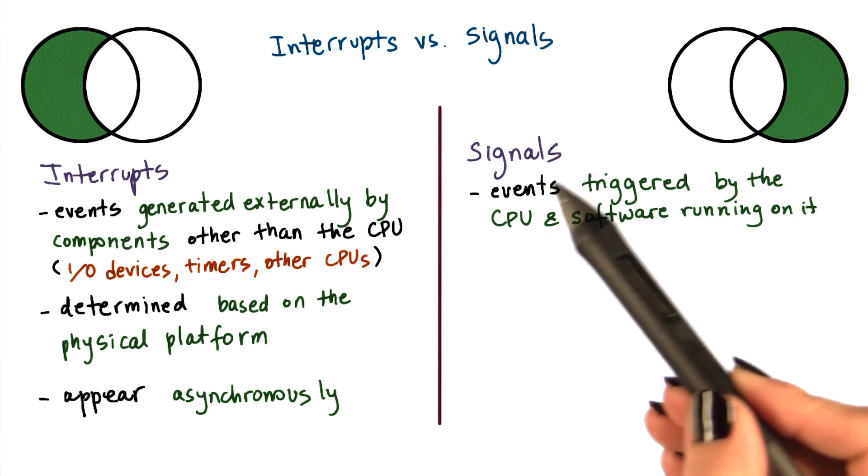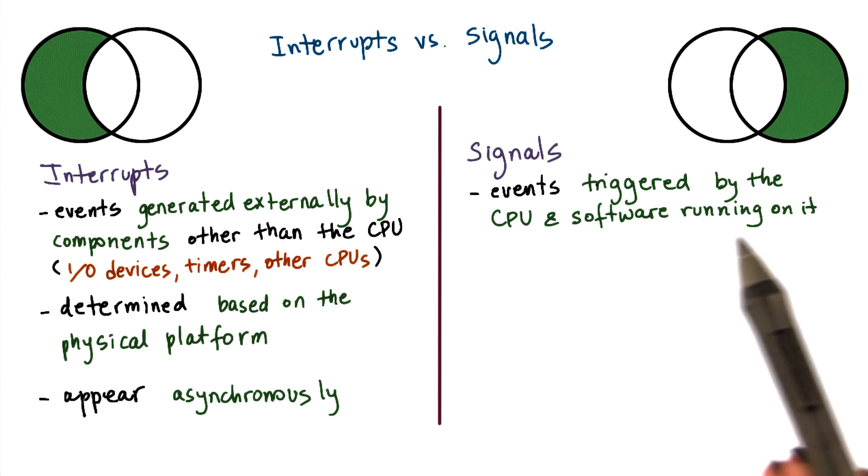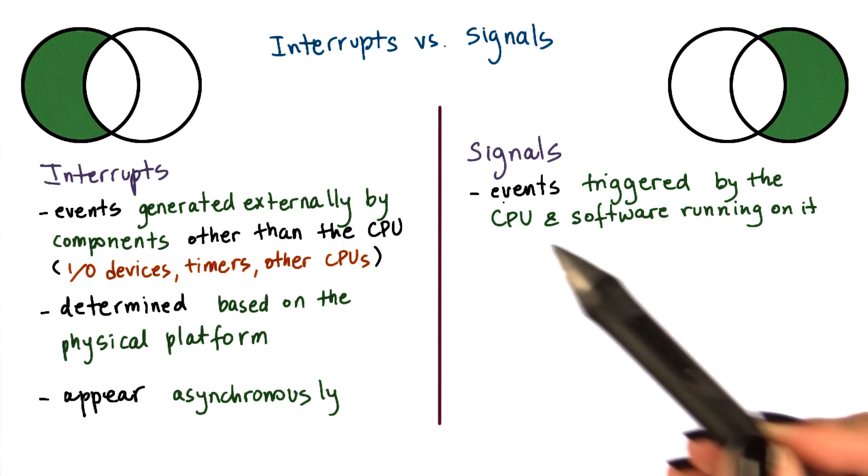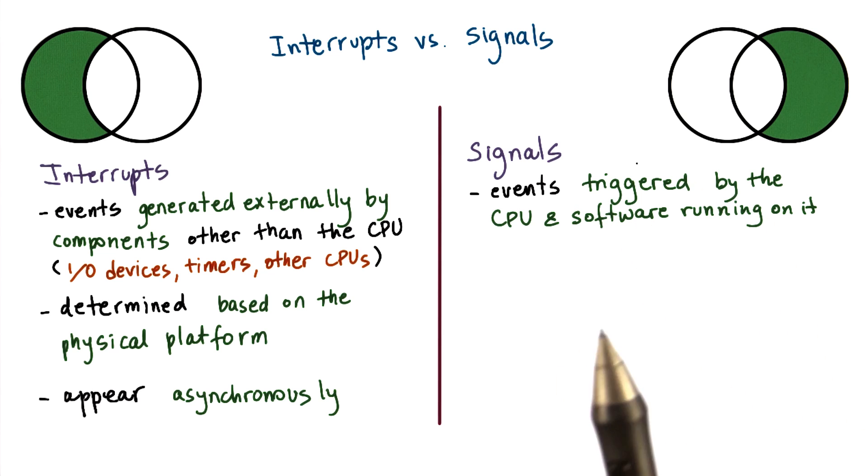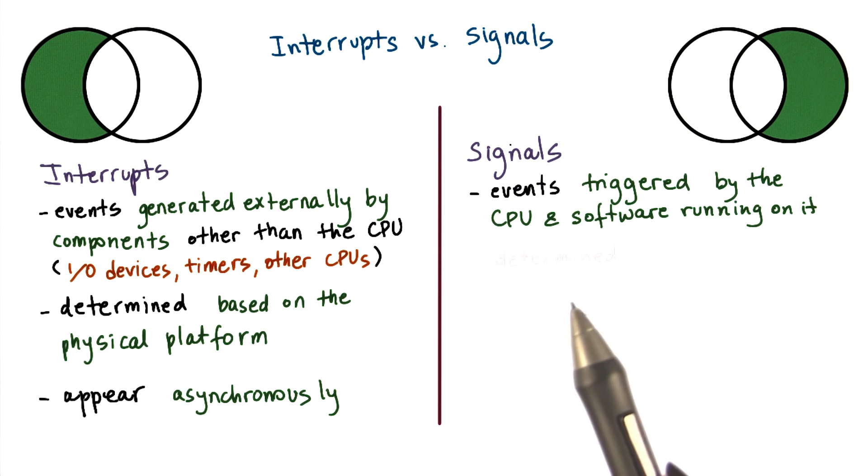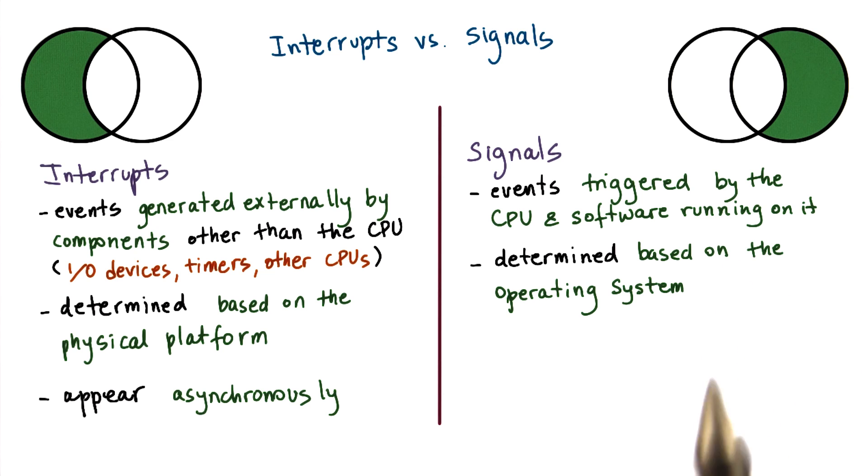Signals, on the other hand, are events that are triggered basically by the software that's running on the CPU. They're either for real generated by software, sort of like software interrupts, or the CPU hardware itself triggers certain events that are basically interpreted as signals. Which signals can occur on a given platform depends very much on the operating system. So two identical platforms will have the same interrupts, but if they're running a different operating system, they will have different signals.